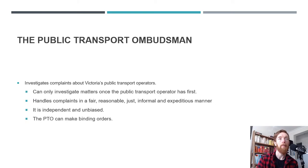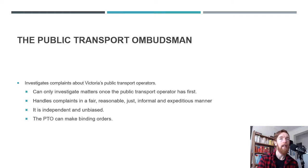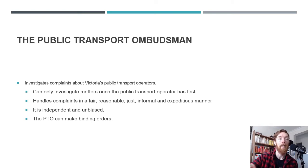An example: the Public Transport Ombudsman investigates complaints about Victoria's public transport operators. They can only investigate matters once the public transport operator has looked into it first — kind of a flaw. But they handle complaints in a fair, reasonable, just, informal and expeditious manner. They're independent and unbiased, and the PTO can make binding orders. For example, years ago Metro was not on time enough and people were actually reimbursed a percentage of their travel costs.